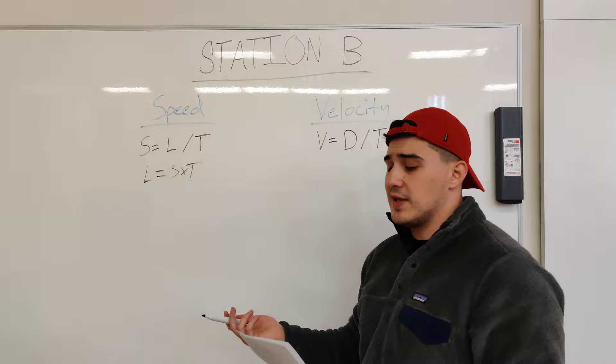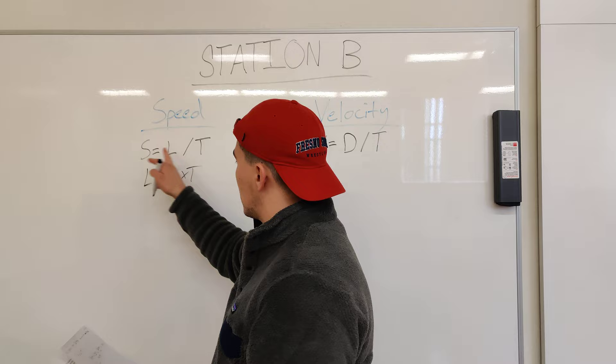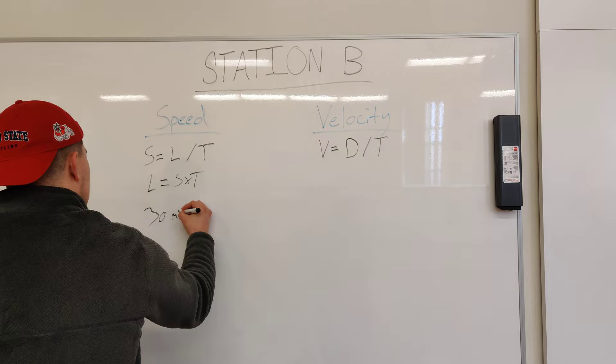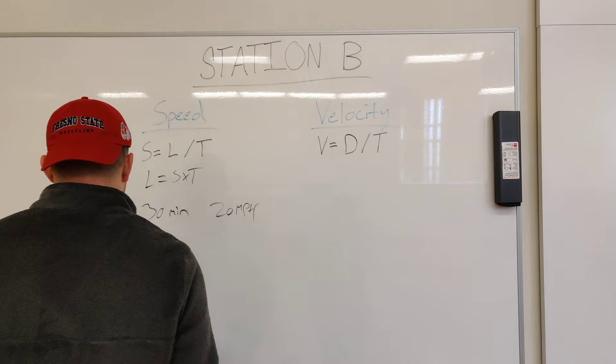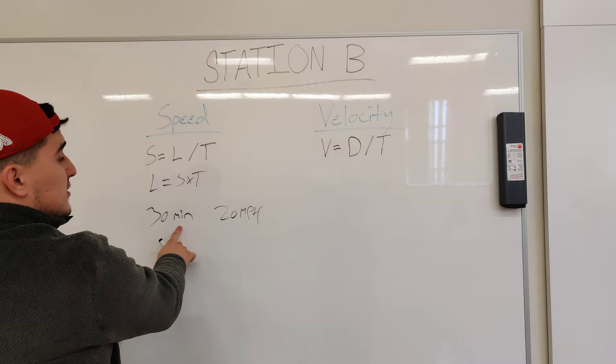I'm going to give you guys an example. Let's say I'm at a 30-minute pace going 20 miles per hour. How many miles have I biked? We're going to use this equation. We know it's a 30-minute pace and we're going 20 miles per hour.